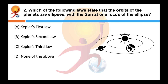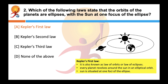Which of the following law states that the orbits of the planets are ellipses with the Sun at one focus? Correct answer is Kepler's first law. It is also known as the law of orbits or law of ellipses. It states that every planet revolves around the Sun in an elliptical orbit, with the Sun situated at one focus of the ellipse.